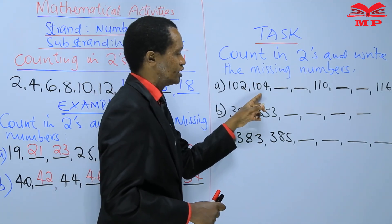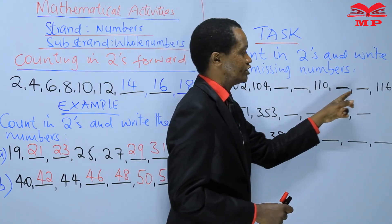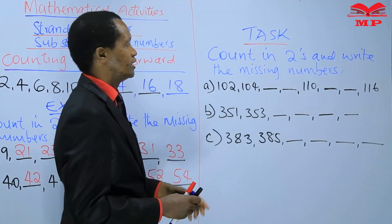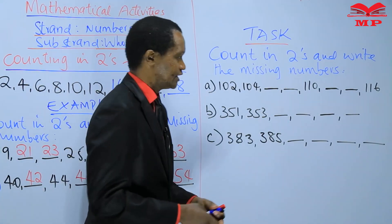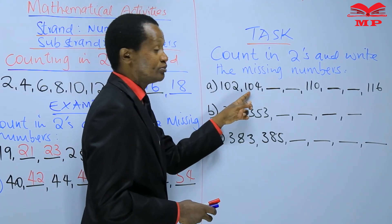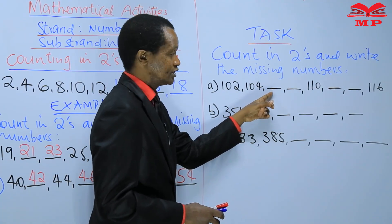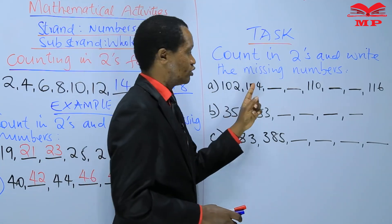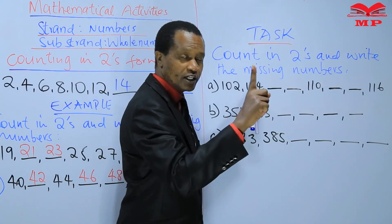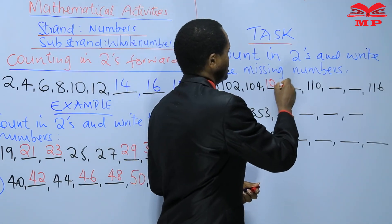Starting from A, we have: 102, 104, ___, ___, 110, ___, 116. We have missing numbers. Starting from 102, the next number 104 is not missing. From 104 the next number is missing, so we count in twos from 104: 104, 105, 106 — the missing number here is 106.